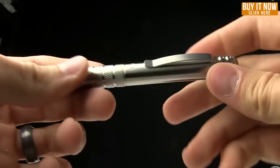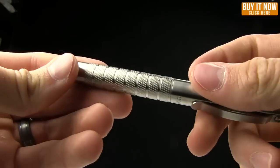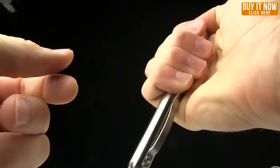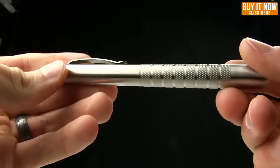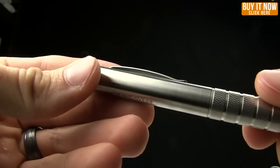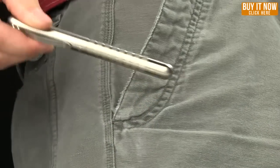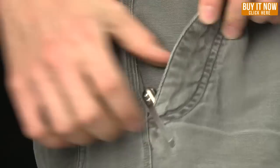Now what you need to know is it's got this knurling here. So if you are using it in a defensive situation, it's going to be in your hand there nicely. Nice clip, pocket clip on it. Let me show you a shot of it in my pocket. Show it in my pants pocket.